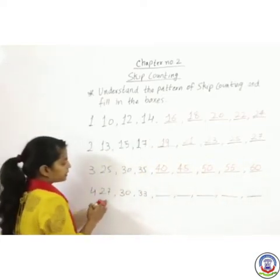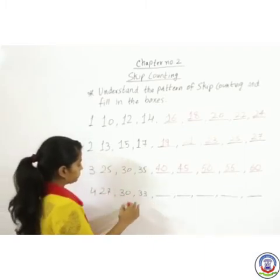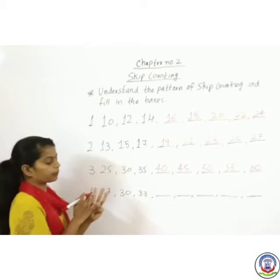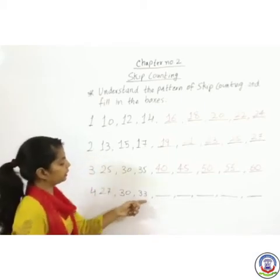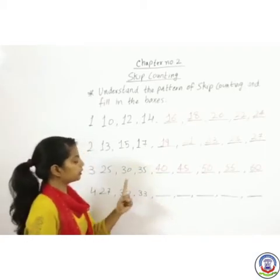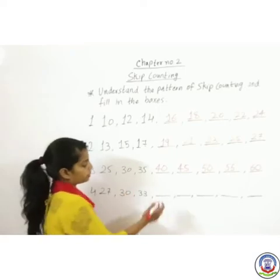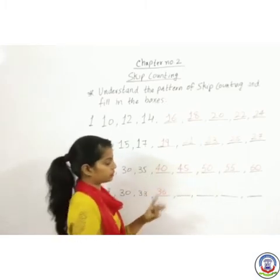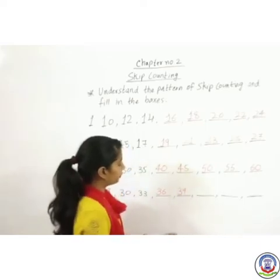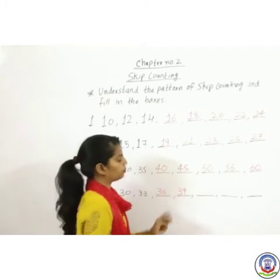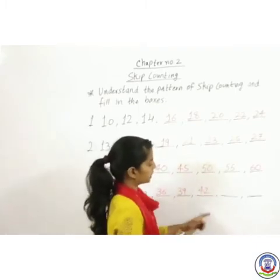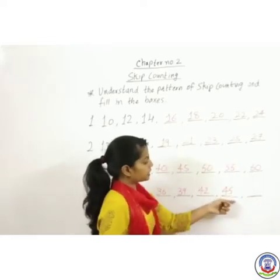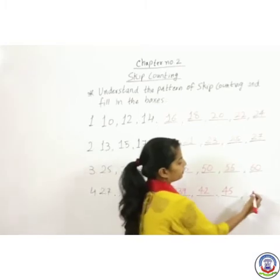Number 4 — the numbers given are 27, 30, 33. We check consistent counting: 28, 29, 30 — so we are skipping 3 numbers. We write 36, then skip 3 to get 39, skip 3 to get 42, skip 3 to get 45, and skip 3 more to get 48.